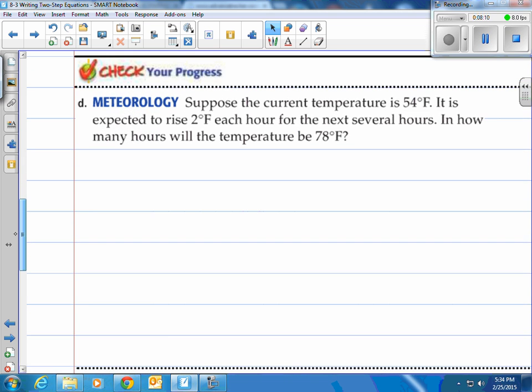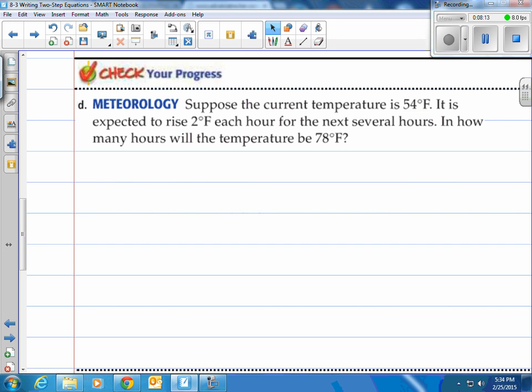Give it a shot. Try this first one. Meteorology: Suppose the current temperature is 54 degrees. It is expected to rise 2 degrees each hour for the next several hours. In how many hours will the temperature be 78 degrees? Currently it's 54 degrees, and it's going to rise 2 degrees per hour. So that's 2 times h, however many hours. You multiply that by 2, and that's how many degrees it went up for that amount of hours. We want to know when it's going to equal up to 78. So our equation is 54 plus 2h equals 78.